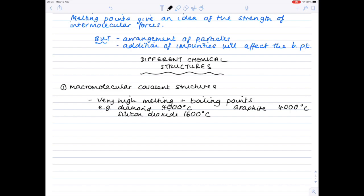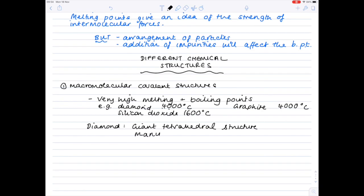Well diamond in particular has a tetrahedral structure and that means that each carbon atom is bonded to 4 others and so it's made up of very many strong covalent bonds and each of these covalent bonds requires quite a lot of energy to break.